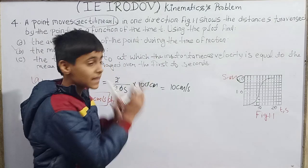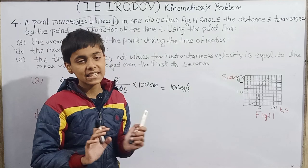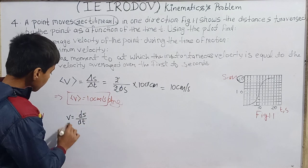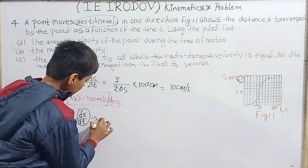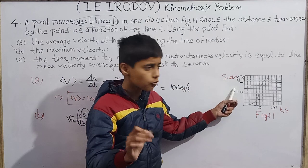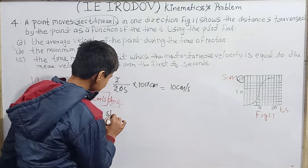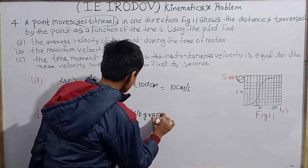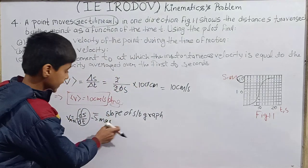The instantaneous velocity is ds/dt. The average velocity and instantaneous velocity are different things. Velocity here means ds/dt. Now, ds/dt is the slope of the s versus t graph — it is of the form dy/dx. So for maximum velocity, we need the slope of the s-t graph to be maximum.